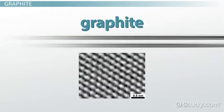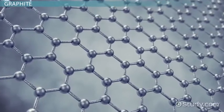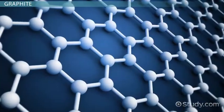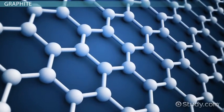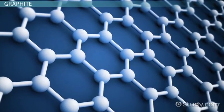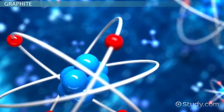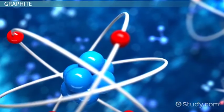In graphite, carbon atoms arrange themselves in two-dimensional layers that are stacked on top of each other. Each sheet of carbon atoms sort of resembles chicken wire bonded together with the next layer. The stacked layers, with all the empty space in between, are what makes graphite so flaky and brittle. That space also allows electrons to flow through, which gives graphite the ability to be a conductor.